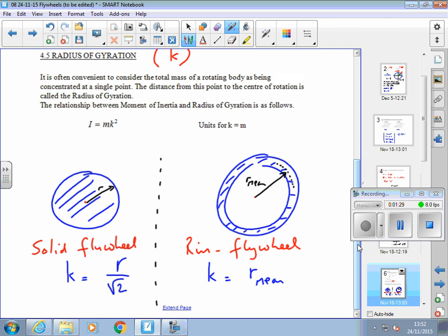Two in particular we're going to talk about. One is a solid flywheel, and one is a rim flywheel, so something with an empty space in the middle, or we're ignoring the spokes. We're just considering the rim.